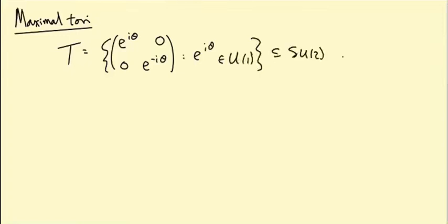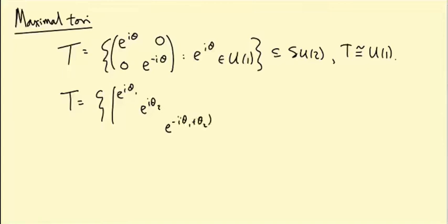For SU(3), we took the subgroup e^(iθ₁), e^(iθ₂), e^(-i(θ₁+θ₂)), where e^(iθ₁) and e^(iθ₂) are both unit complex numbers. So unsurprisingly, this one is isomorphic to U(1) squared.